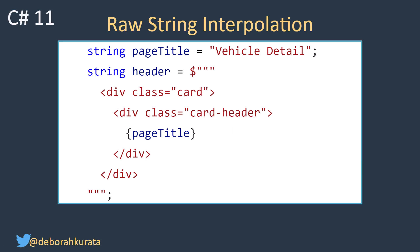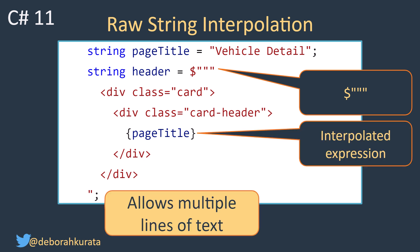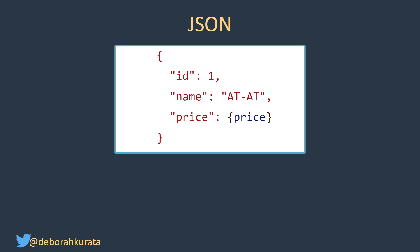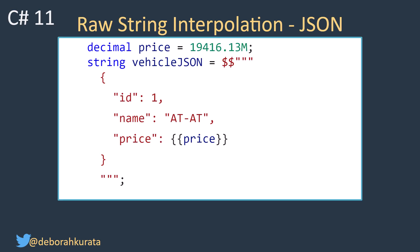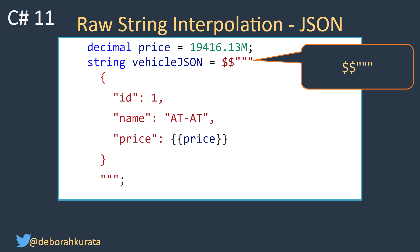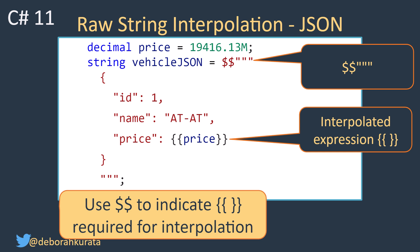A better option is raw string interpolation, available in C# 11. Here we add the dollar sign in front of our three sets of quotation marks. Then we can define multiple lines of text or multiple lines for our interpolation expression. Let's look at another example — creating a JSON string. For JSON, we need to use curly braces, but the interpolated string also needs curly braces. The C# team wanted a configurable solution, so for raw string interpolation we can use two dollar signs. The two dollar signs means that we need two sets of curly braces for the interpolation. Or we could use three dollar signs with three sets of curly braces and so on. The number of dollar signs indicates the number of pairs of curly braces required for interpolation.